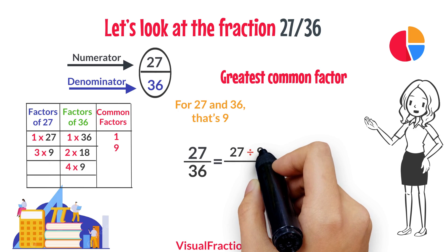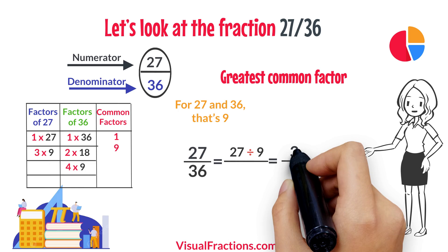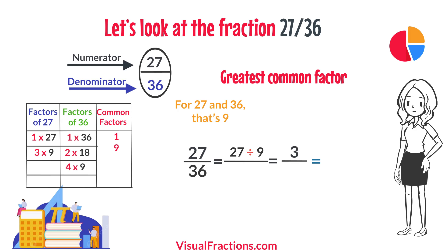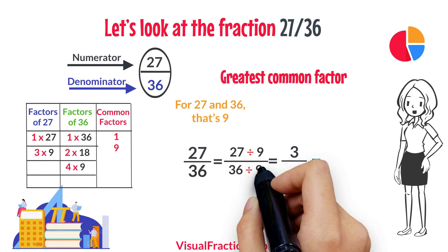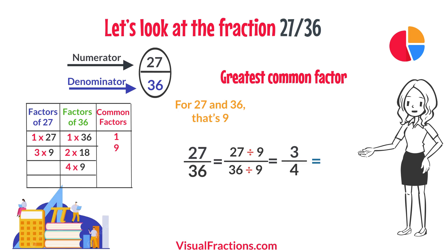We start by dividing 27 by 9, which gives us 3. Then we divide 36 by 9, which results in 4.